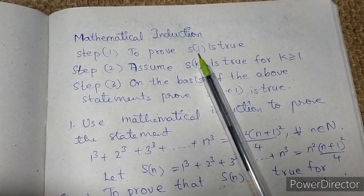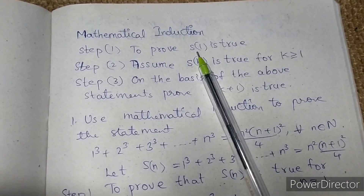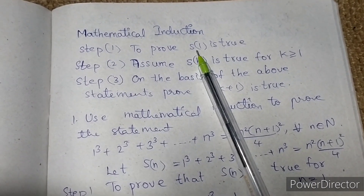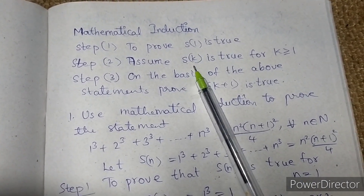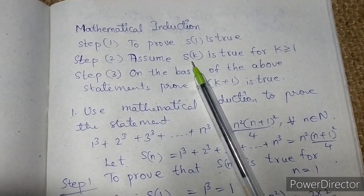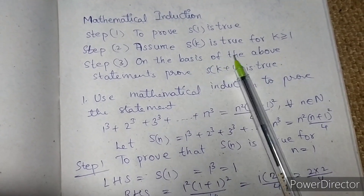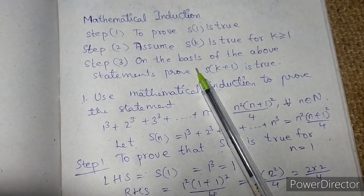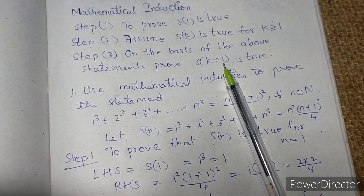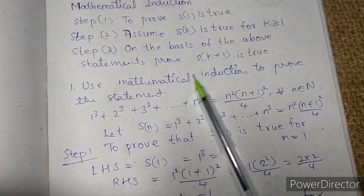In short, what we have to do is: we have to check whether the statement is true for S(1) or not. Then we have to assume that it is true for S(k). Then, on the basis of that, we have to prove it for S(k+1) — that the whole statement is true for S(k+1). So let's quickly see a problem.